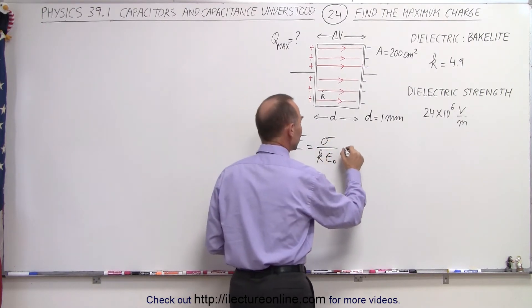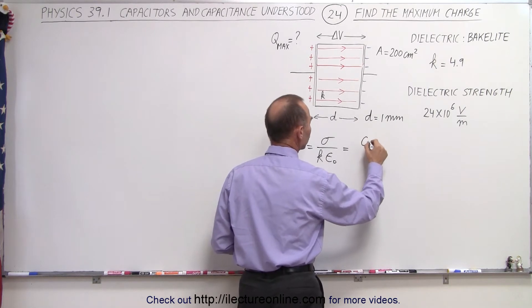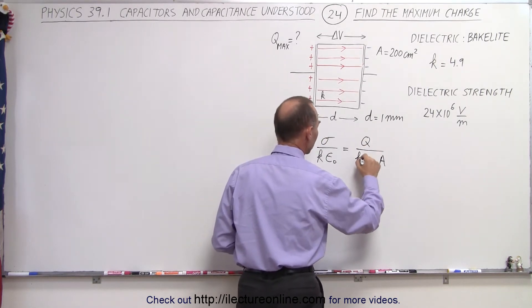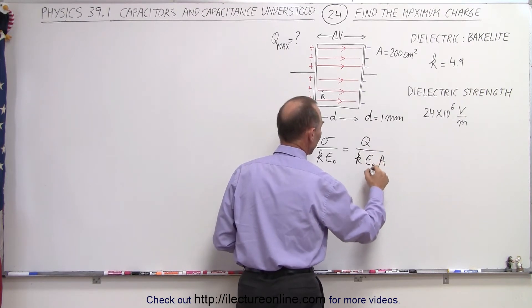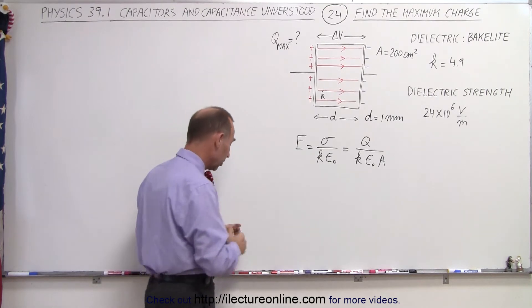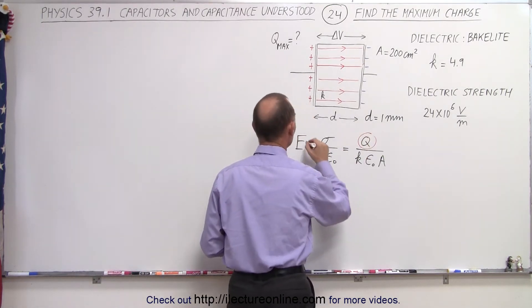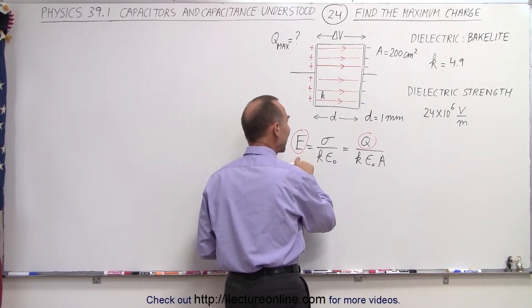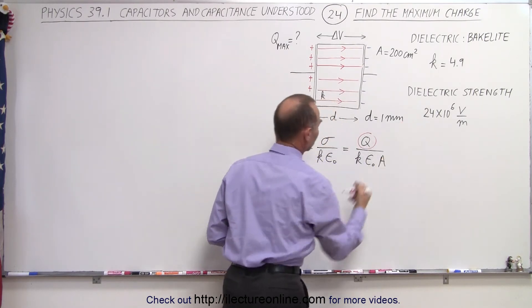And since the charge density can be written as the charge q divided by the area, so we replace that, we end up with q over k epsilon sub nought times a. So here we see that there's a relationship between the amount of charge on the plates and the strength of the electric field. And of course, the electric field cannot exceed the dielectric strength.